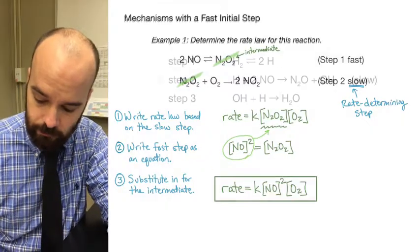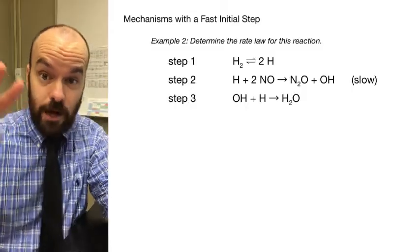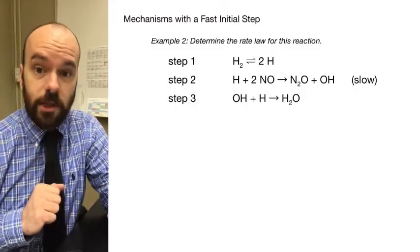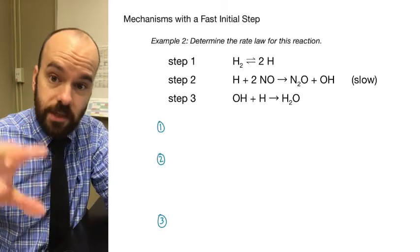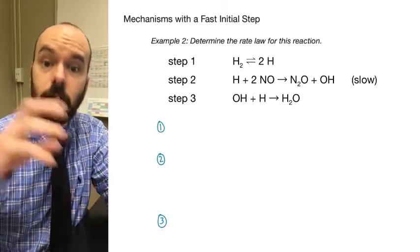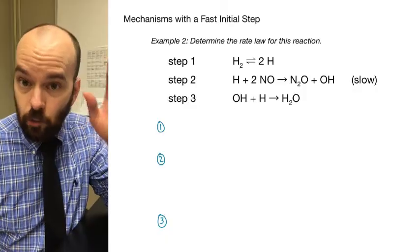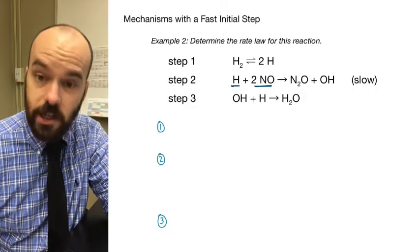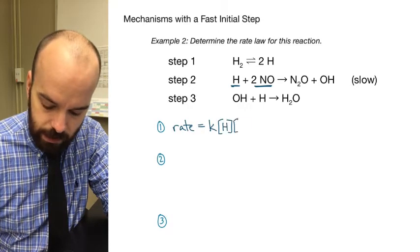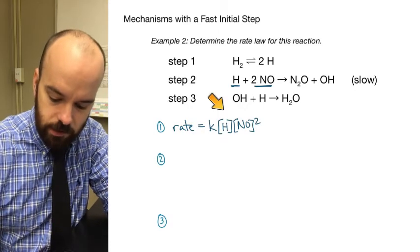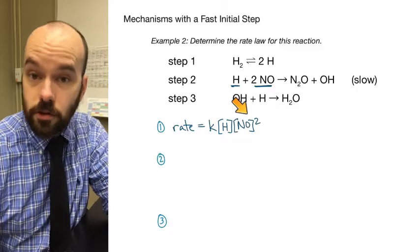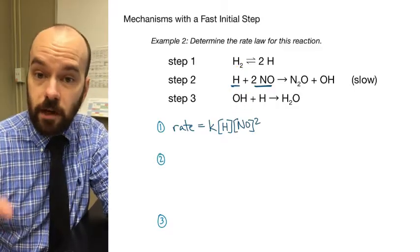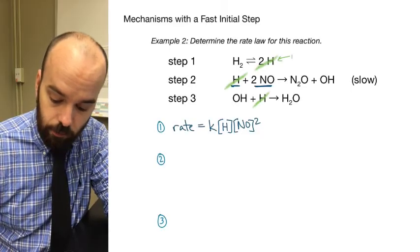Let's do one more example. Here we have a three-step reaction, but it works the same as a two-step reaction — we follow the same three-step process. First, we write the rate law based on the slow step, which has H and two NO's as reactants, giving us rate equals k times [H] times [NO]².